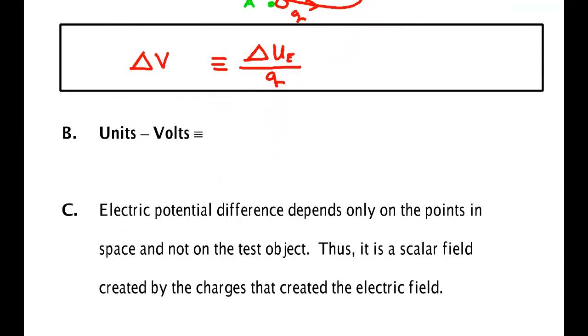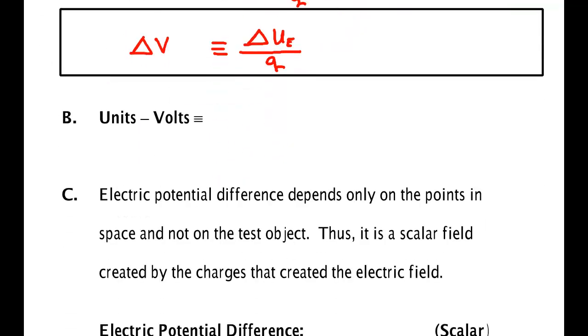Now the units. Well the units come from the definition. The units are a joule divided by a coulomb. Well that's a joule per C. Well this is an energy. This is a charge. And we could have left it at joule per coulomb, or we could have left it at newton meters per coulomb.